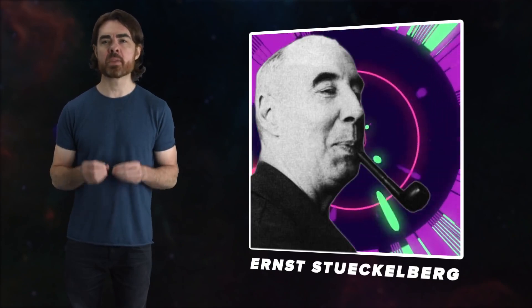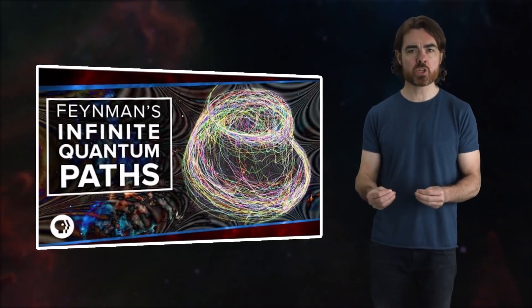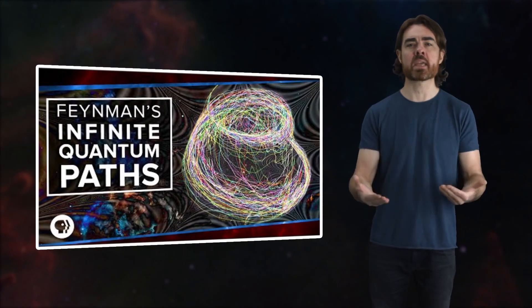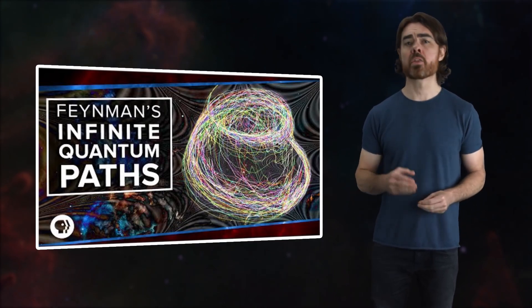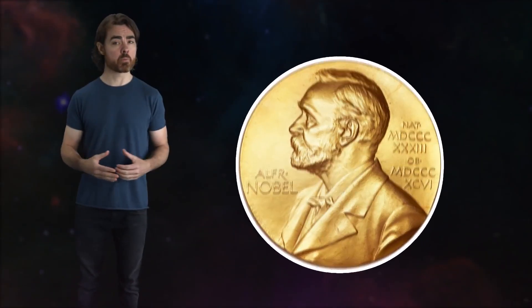In fact, it was Swiss physicist Ernst Stuckelberg who first proposed this idea in the 1930s. Wheeler's one electron universe idea inspired Feynman to build this representation of antimatter into his path integral formulation and the following space-time interpretation of quantum mechanics, which won him the 1965 Nobel Prize in Physics.